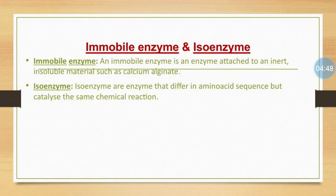There are also immobilized enzymes and isoenzymes. An immobilized enzyme is an enzyme attached to an inert, insoluble material such as calcium alginate. This can provide increased resistance to changes in conditions such as pH or temperature. Isoenzymes are enzymes that differ in amino acid sequence but catalyze the same chemical reaction.